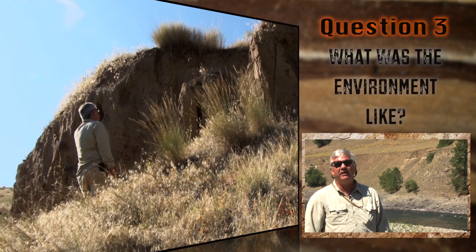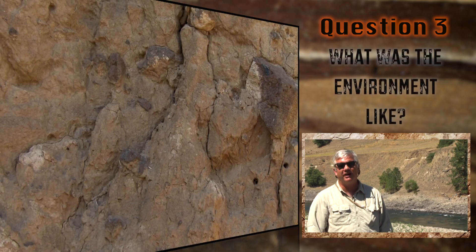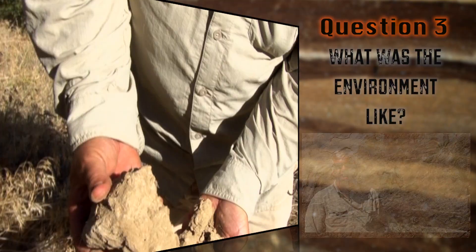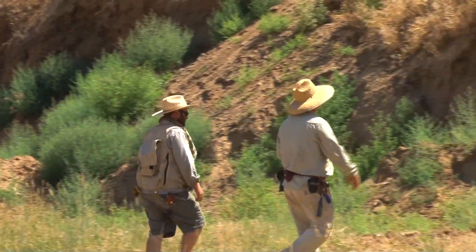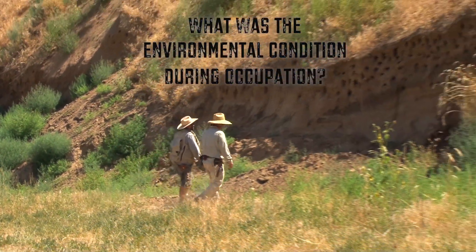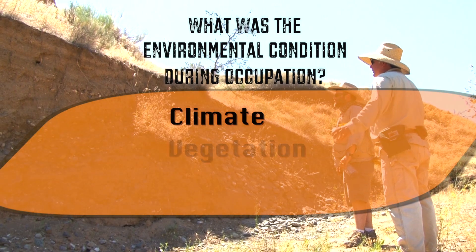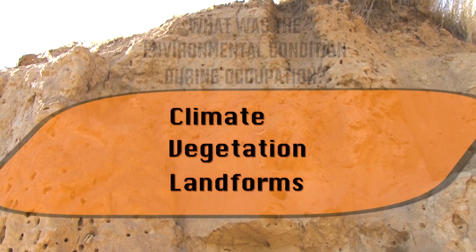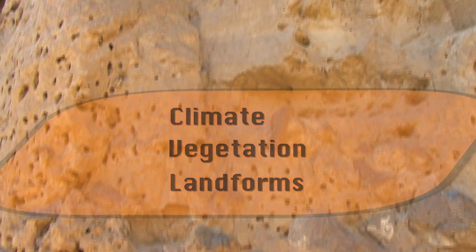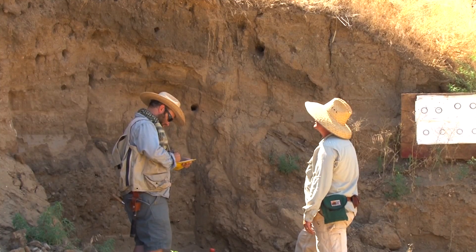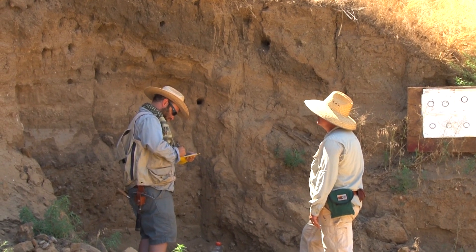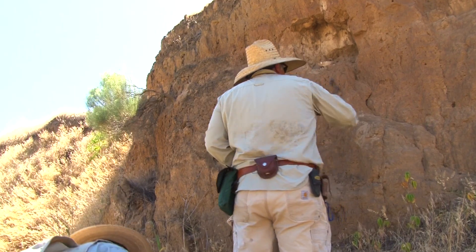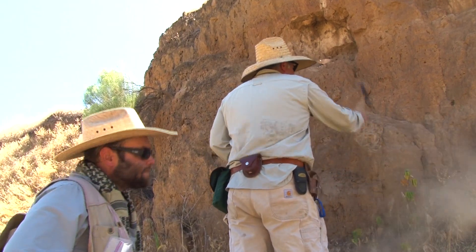The third question a geoarchaeologist commonly works on is: what were environmental conditions like around an archeological site during the time it was occupied by people of the past? The geoarchaeologist works to find records about past climate, vegetation, landforms, and other indications of an area's paleoenvironmental conditions. By understanding this part of the past surrounding an archeological site, we can better understand why people make the decisions they do, particularly as it relates to human-environmental interaction.